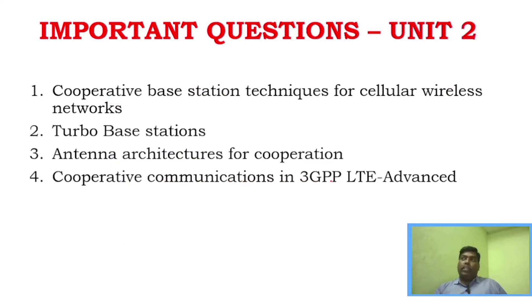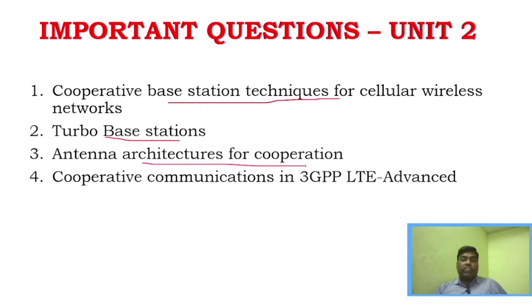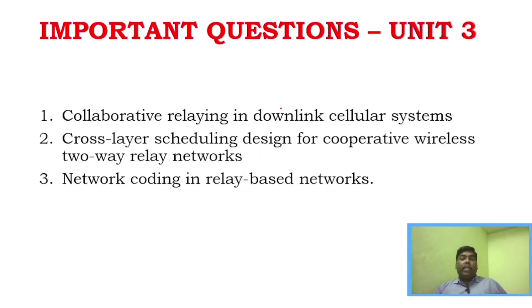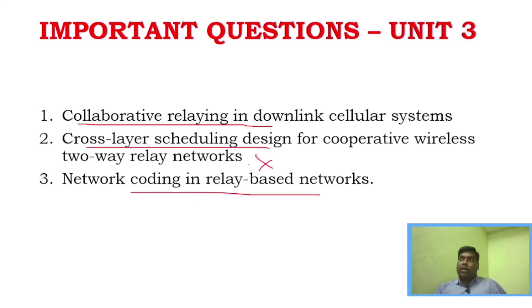For Unit 2, about four questions will be asked. Topics include cooperative base station techniques for cellular wireless networks, turbo base stations, antenna architectures for cooperation, and cooperative communication in 3G. For Unit 3, collaborative relaying in downlink cellular systems and cross-layer scheduling are very important, along with network coding and relay-based networks — again around three questions.